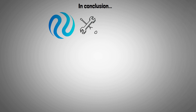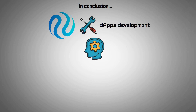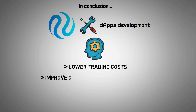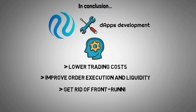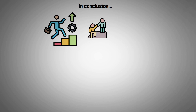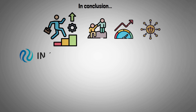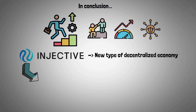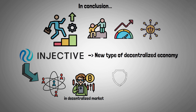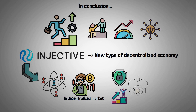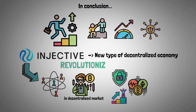In conclusion, Injective Protocol was created specifically for developing decentralized applications. With its technology, Injective can lower trading costs, improve order execution and liquidity, and eliminate front-running. By utilizing technological advancement to facilitate, accelerate, and decentralize trading, Injective Protocol is establishing a new type of decentralized economy. The platform provides users with more secure and effective access to crypto assets in a decentralized market, potentially revolutionizing the financial sector.